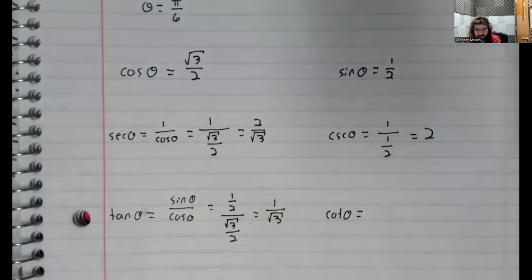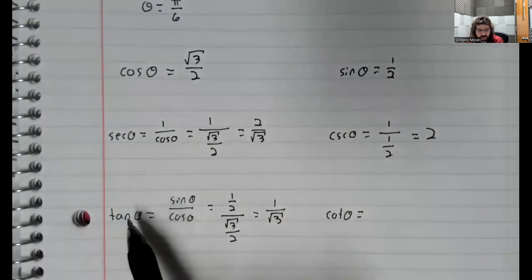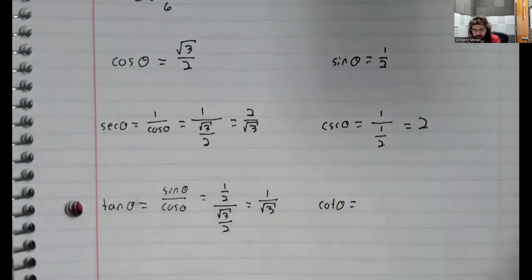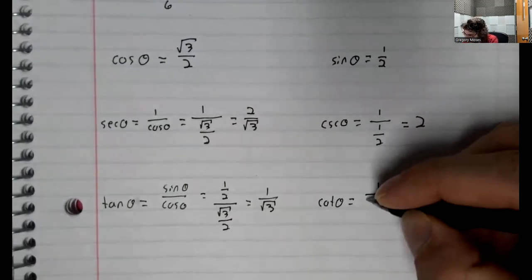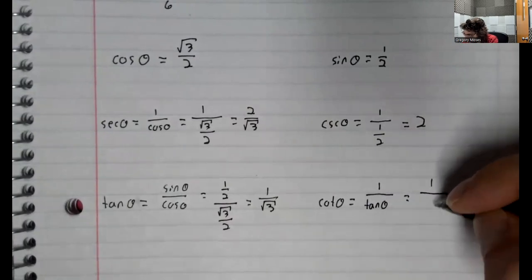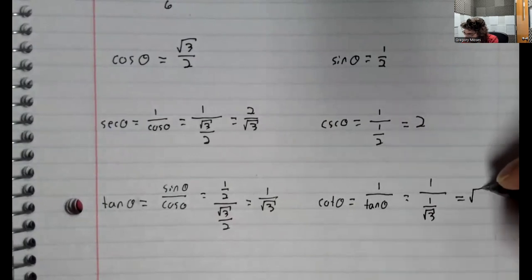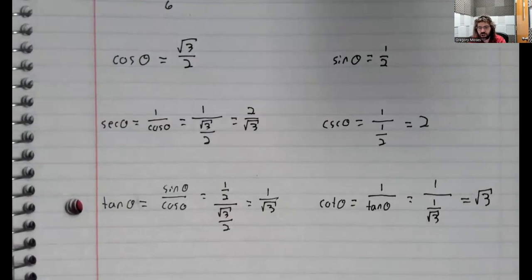We could either think of the cotangent as the cosine over the sine, or we could think of it as 1 over the tangent. Those are the same thing. Let's think of it as 1 over the tangent, because we've already found the tangent. And there are the cosine, sine, secant, cosecant, tangent, and cotangent of pi divided by 6.